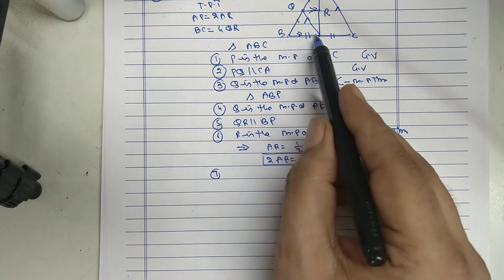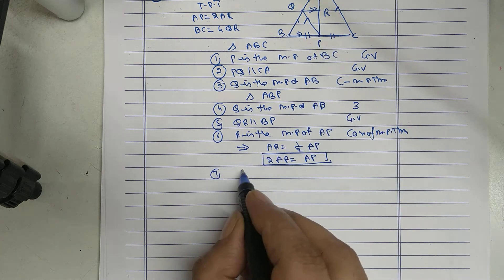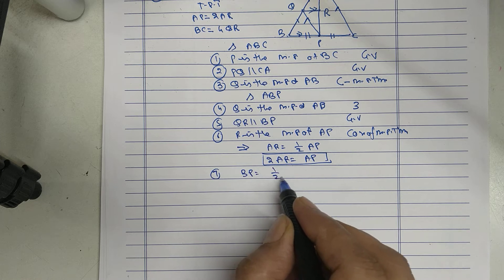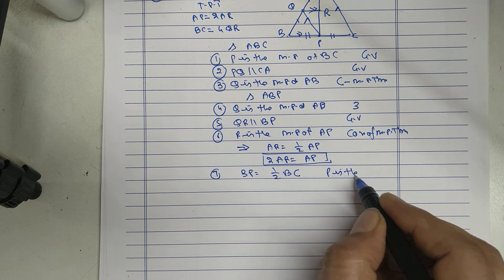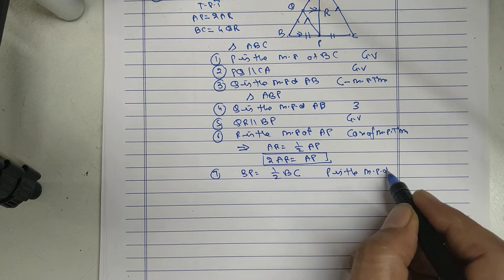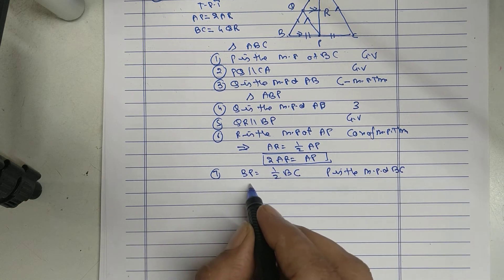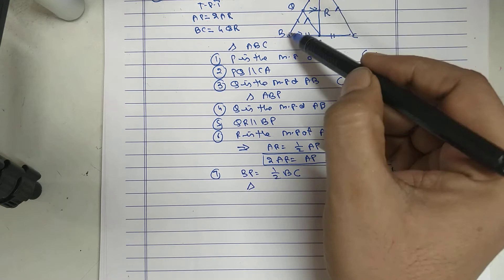Now, BP is half of BC. P is the midpoint of BC. In triangle ABC. In triangle ABP,